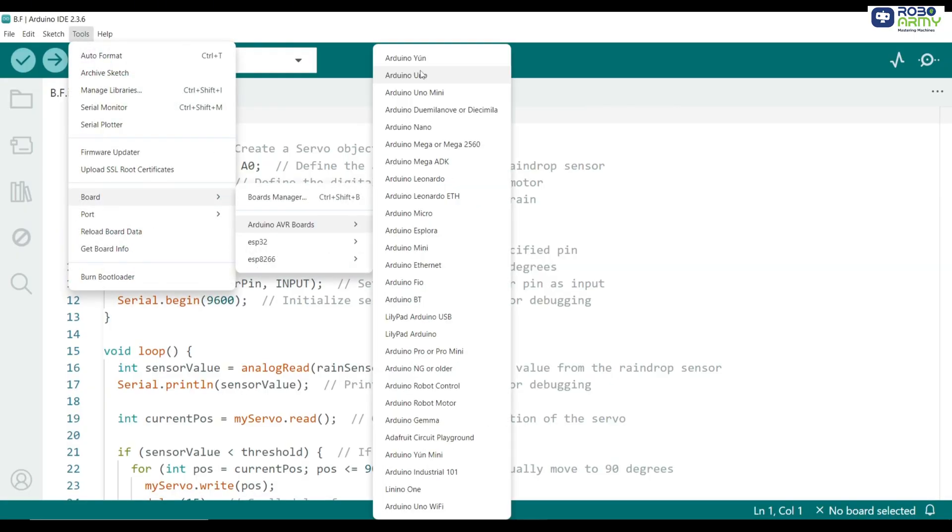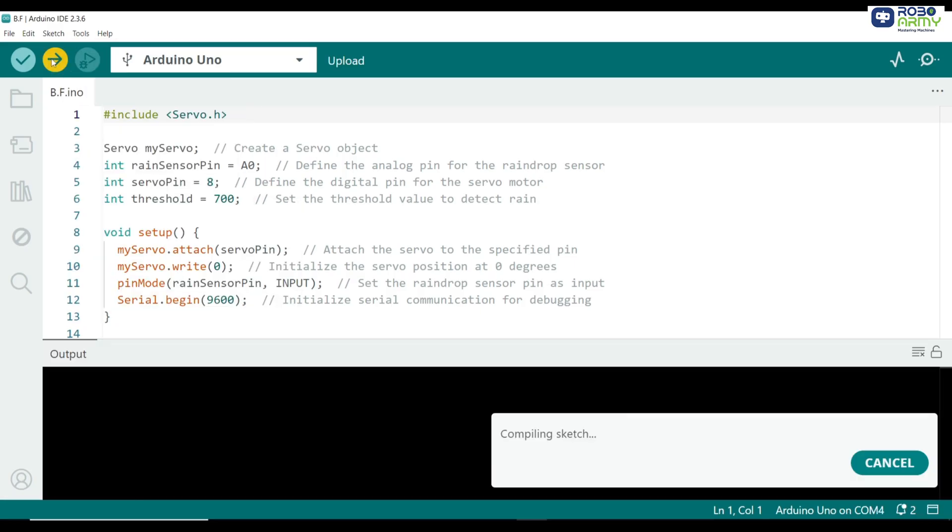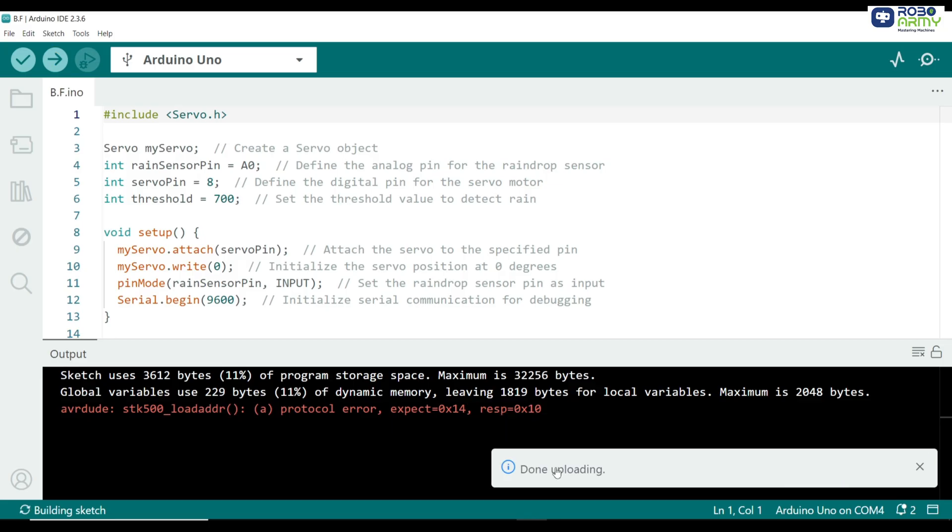Connect the Arduino Uno to your laptop using the USB cable. Go to Tools, select Board and Arduino Uno. Go to Tools, select Port that shows your Arduino connection. Now click the upload button. The code will compile and upload into the Arduino. After a few seconds, you will see 'Done uploading' and your Arduino is programmed successfully.